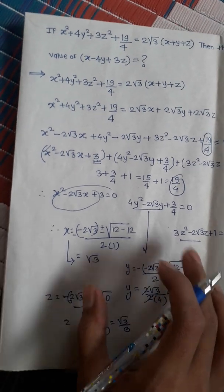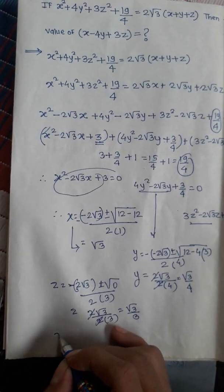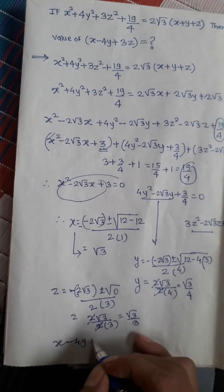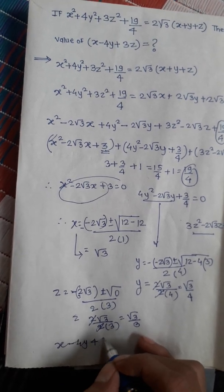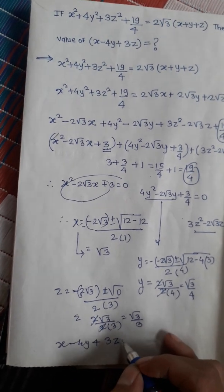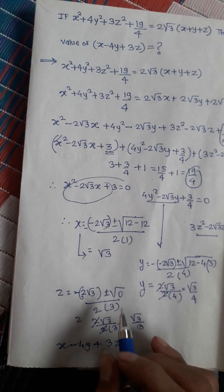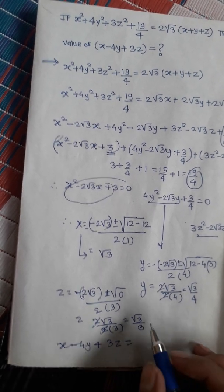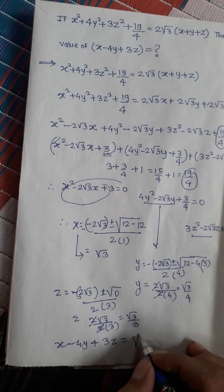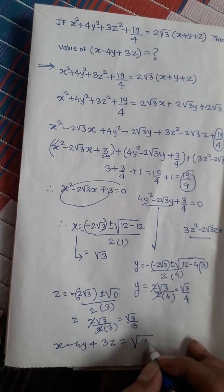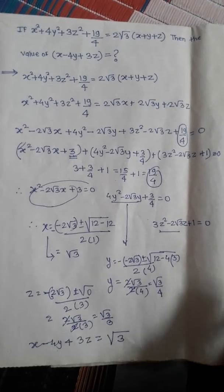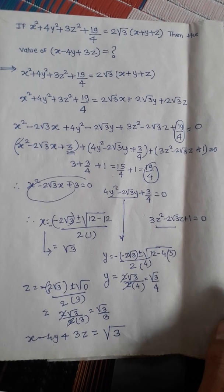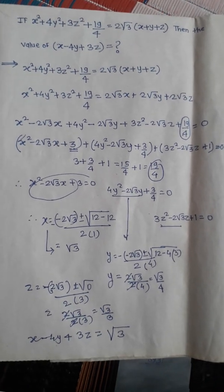Now we find the value of x - 4y + 3z. Putting in the values of x, y, and z we get the answer as √3. Thank you friends, hope you like this video. Please like and subscribe to my channel. Have a nice day!